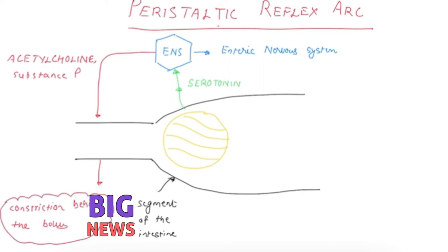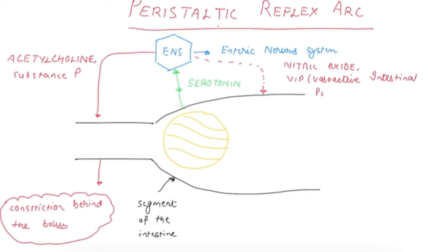Ahead of the bolus, nitric oxide and VIP or vasoactive intestinal polypeptide are released. They cause relaxation ahead of the bolus. So constriction behind the bolus, relaxation ahead of the bolus.